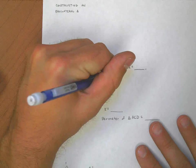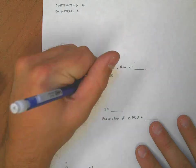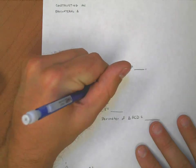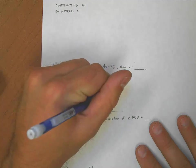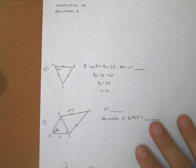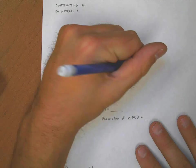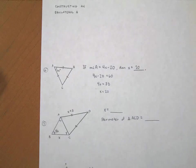4x minus 20 is equal to 60, which means that 4x is equal to 80. And if I divide that 4 out, that means x must be 20. x is 20. That's a pretty simple problem, right?